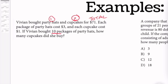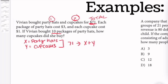All right, the first thing I'm going to do is let X equal party hats, and let Y equal cupcakes. I know if I add the total cost of the party hats and cupcakes together, I'm going to get this total of 71. So another way to rewrite this is basically X plus Y equals 71.